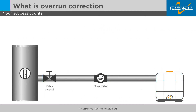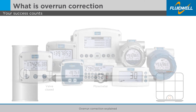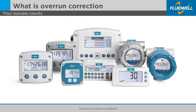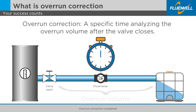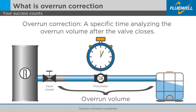What is overrun correction? Fluidwell batch controllers have a self-learning overrun correction. During a specific time set by the operator, the controller analyzes the overrun volume of the batch and automatically corrects the end-of-batch timing of the control outputs.